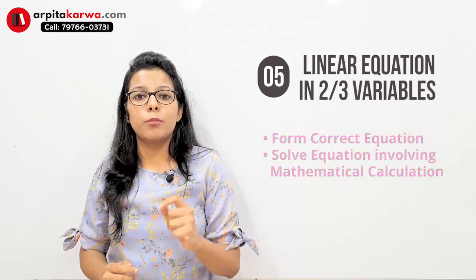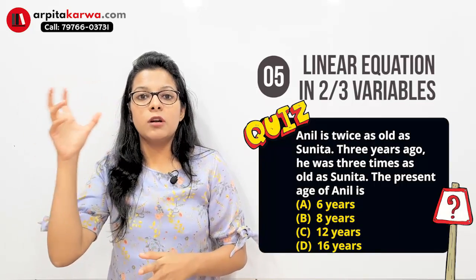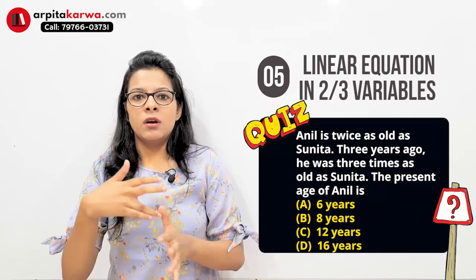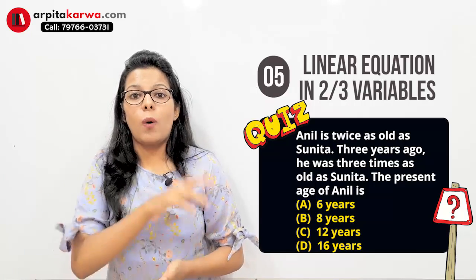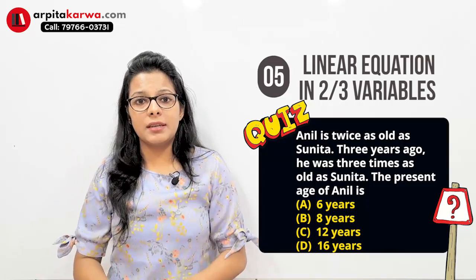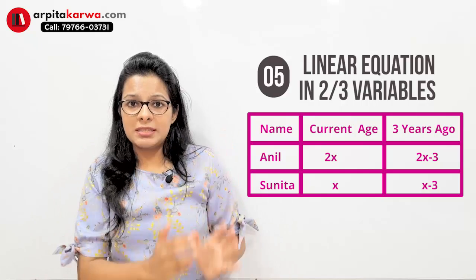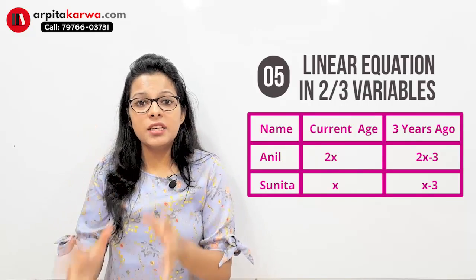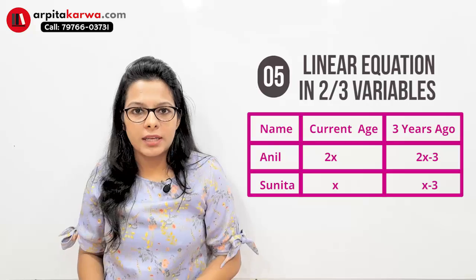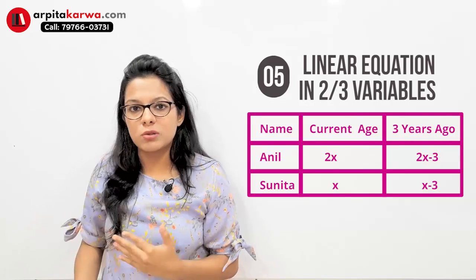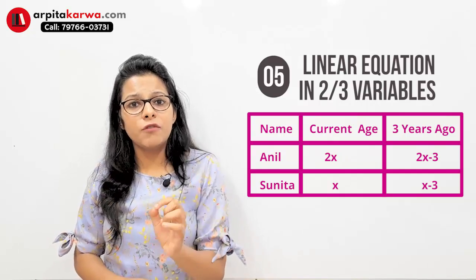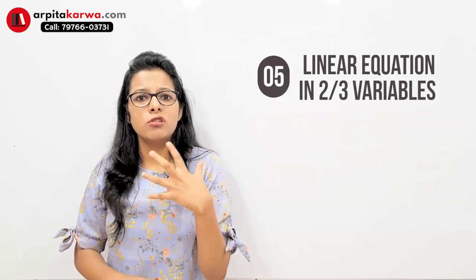There is a tricky question type based on age. You will be given two characters and asked to find their ages. For example: Anil is three times older than Sunita; three years back Anil was twice as old as Sunita — find their current ages. The best way is to make a table first and then form equations and solve. In linear equations, the only tricky part is forming the equation; solving it is straightforward because the values given are very small.